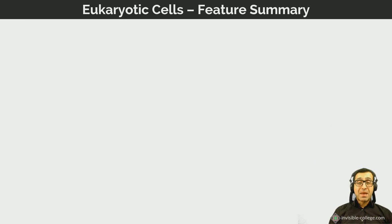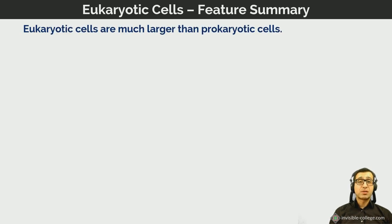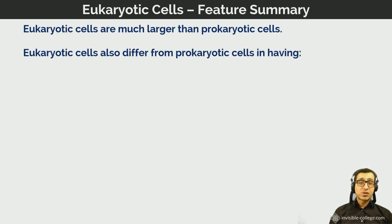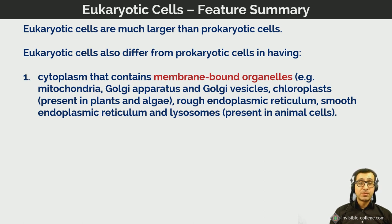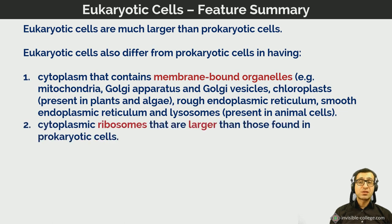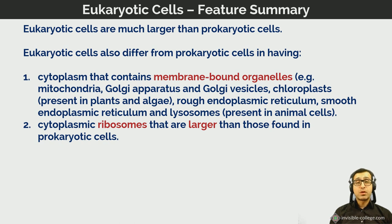To summarize the main features of eukaryotic cells: eukaryotic cells are generally much larger than prokaryotic cells; they have a cytoplasm containing membrane-bound organelles; their cytoplasmic ribosomes are larger than those in prokaryotic cells; and they have a membrane-bound nucleus containing the genetic material — the DNA.